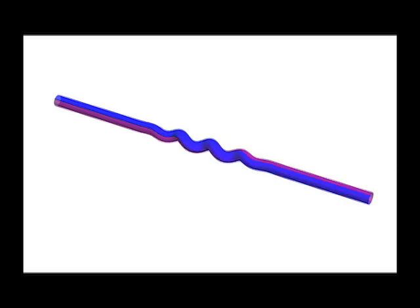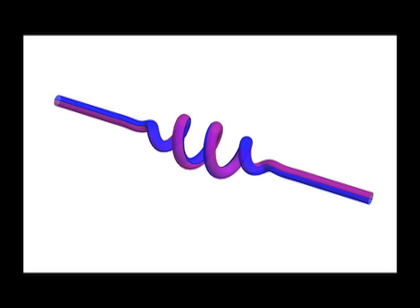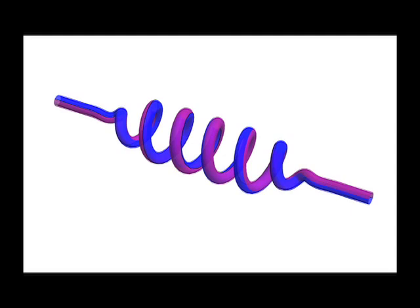This animation illustrates how the shape of the curve affects parallel transport. The colors indicate the orientation of a frame prescribed at the left end and parallel transported over the entire curve. Observe how the frame at the right end turns as the torsion of the curve increases.